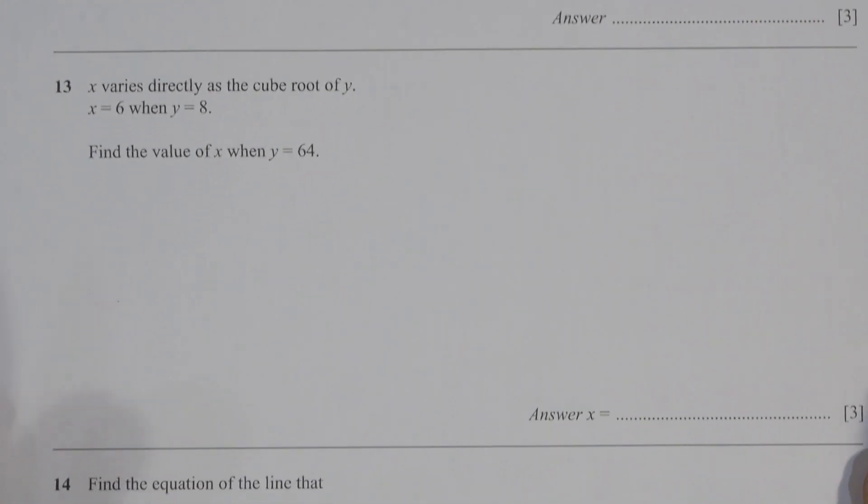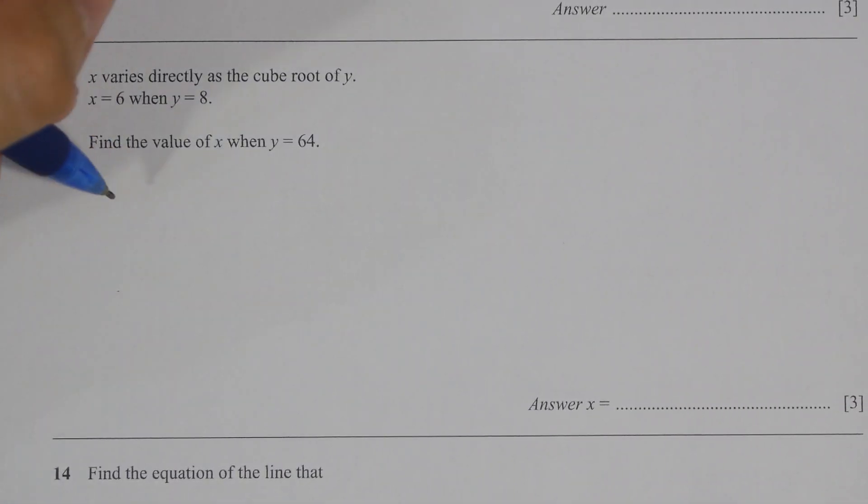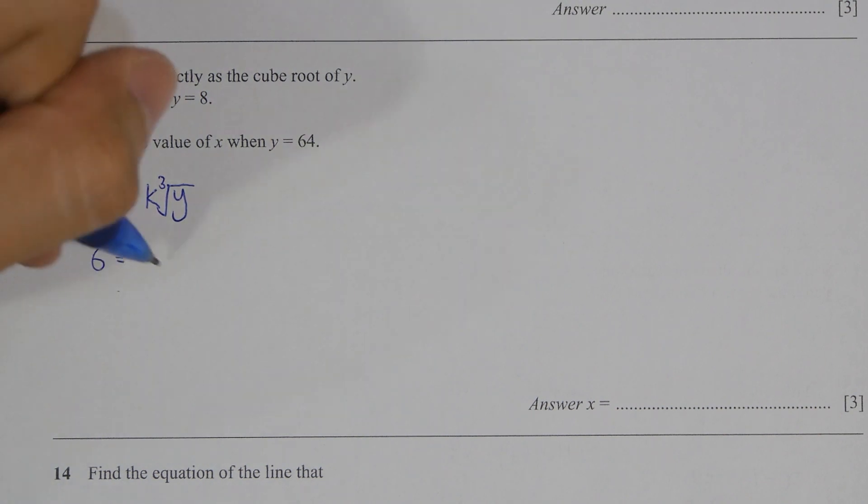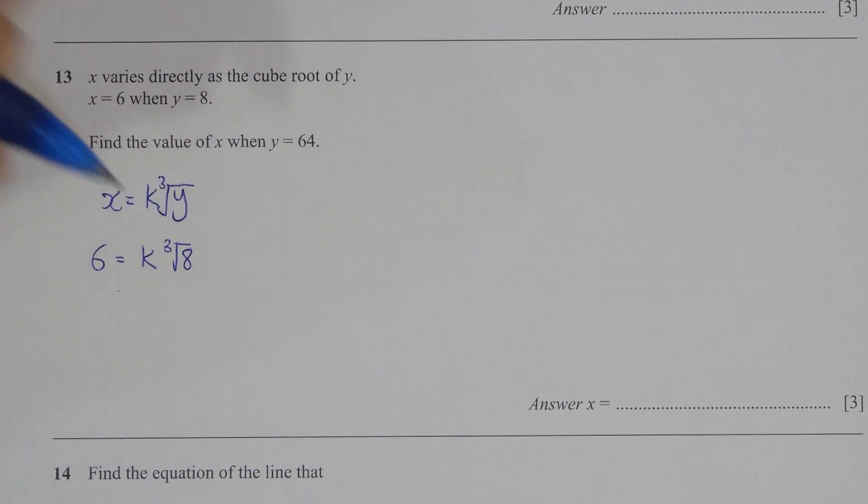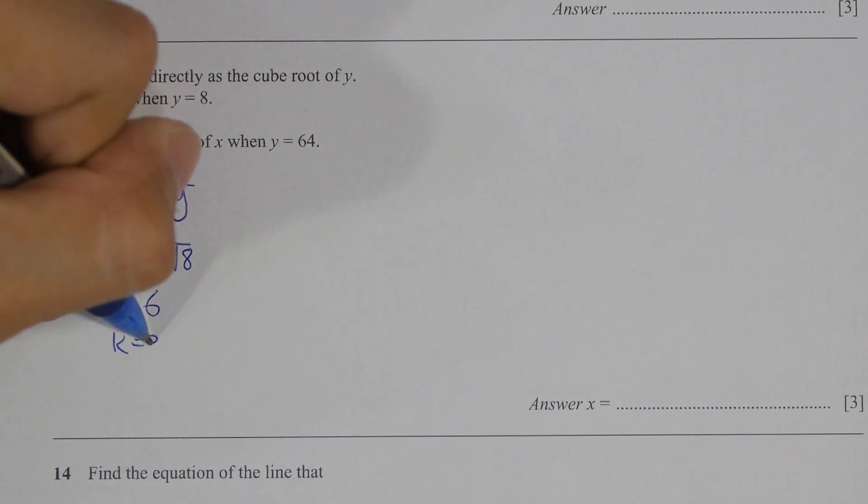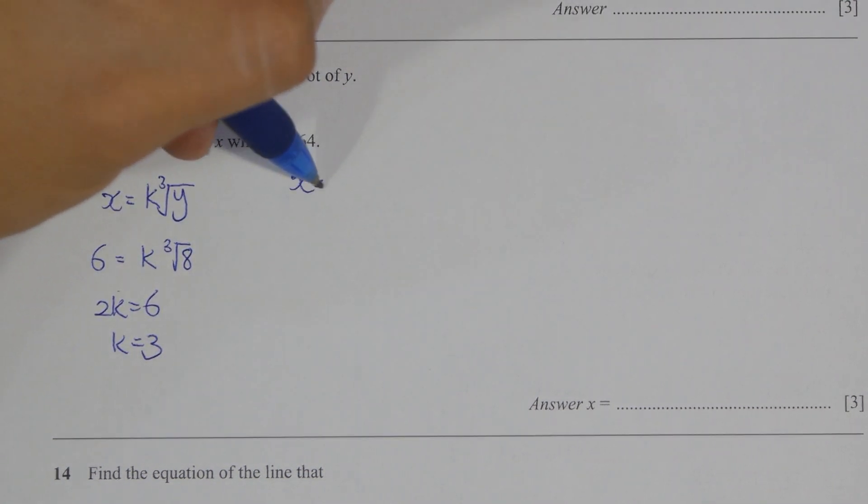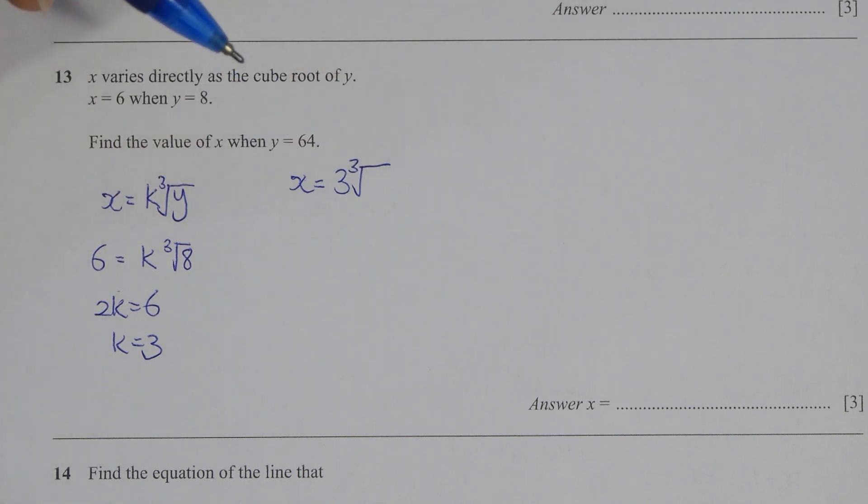Question 13, this is directly proportional. Formula goes by x equals to k and y equals to the cube root of y. Key in the variables x equals to six and y equals to eight, then you will identify k's value as three. Substitute sixty four into y's position, then your final results for x is actually 12.